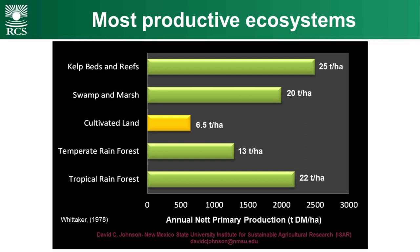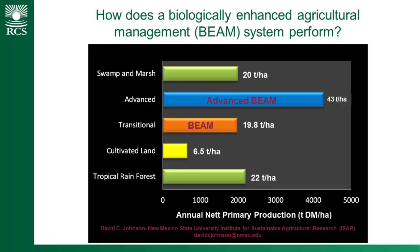If you look at the most productive ecosystems in the world — take kelp beds and reefs, for example — they produce about 25 tonnes of dry matter a year. Tropical rainforests produce about 22 tonnes of dry matter a year. Agricultural land produces about 6.5 tonnes of dry matter a year. So where we give Mother Nature a go and get out of the way, her capacity is up around 20-odd tonnes of dry matter a year, and we're doing around a quarter of that. David Johnson's results using BEAM average up around 20 tonnes of dry matter — from annual crops, he's now able to produce the same biomass that a tropical rainforest produces annually.